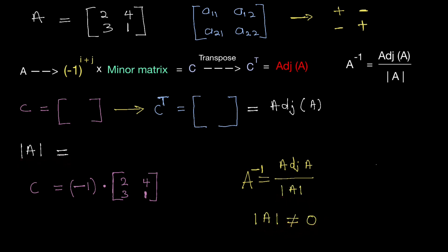Starting with matrix element 2 at position a11, the sign is minus 1 to the power of 1 plus 1, which is minus 1 squared, giving plus 1. To find the minor matrix for element a11, I draw a horizontal and vertical line through that element. The remaining element is 1, so the minor is 1. Therefore C11 equals plus 1 times 1, which is 1.